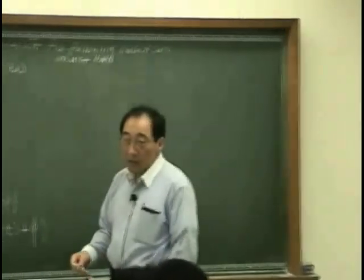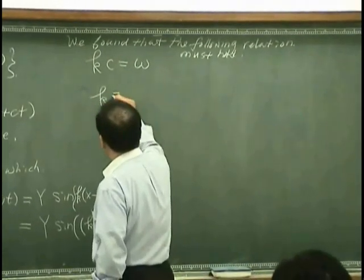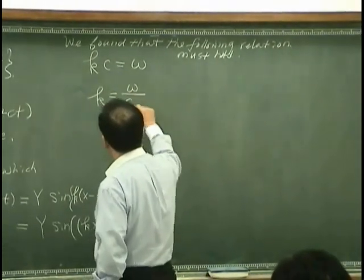So, kc equals omega. In other words, k that we defined is omega over c.